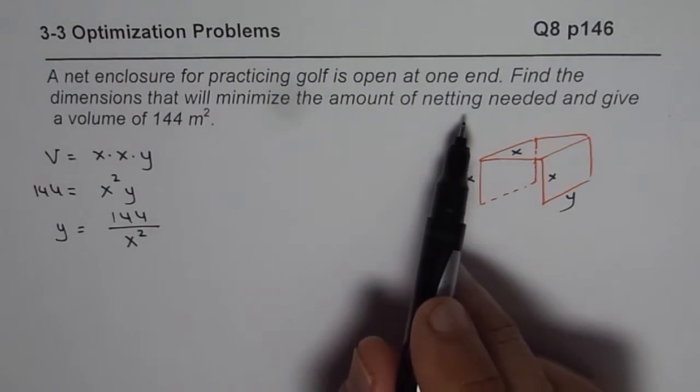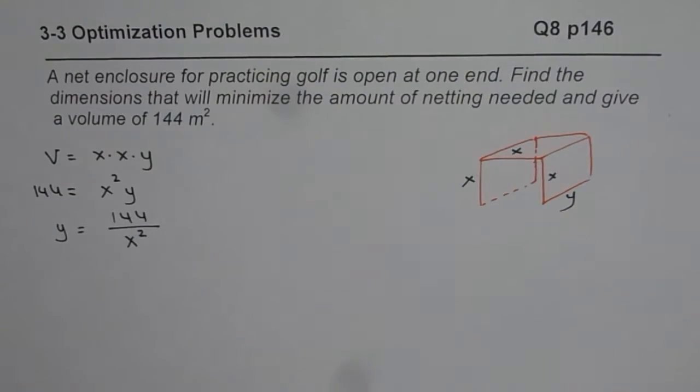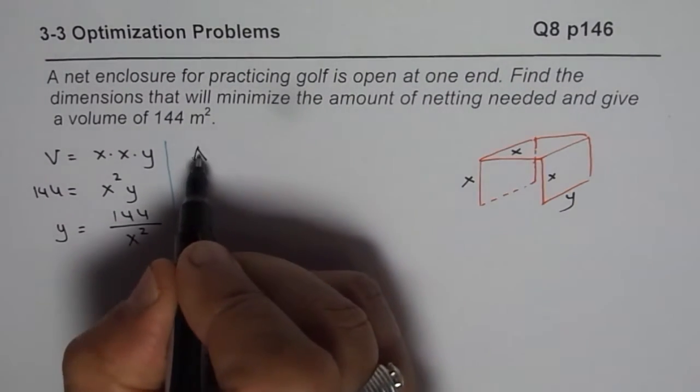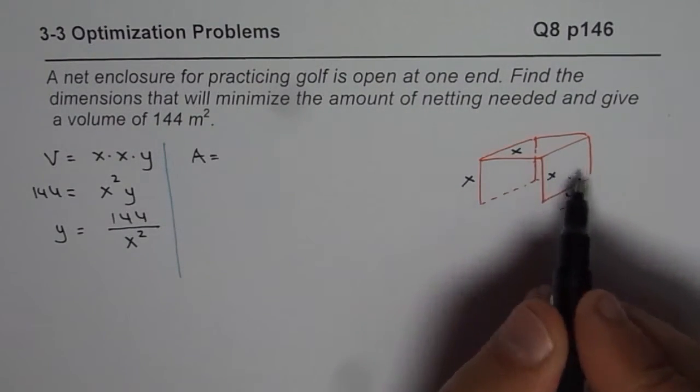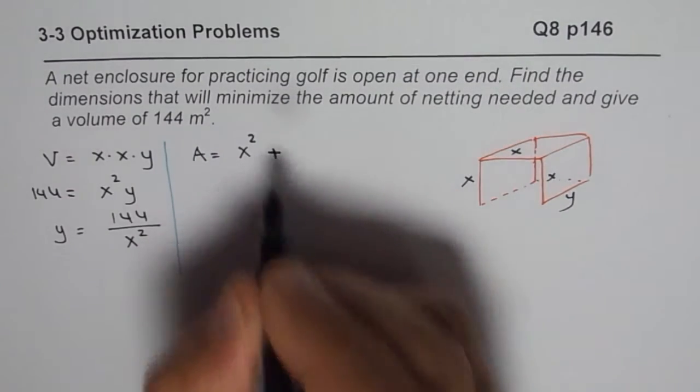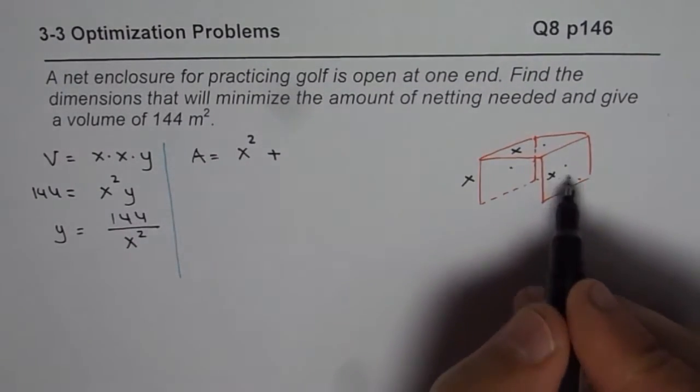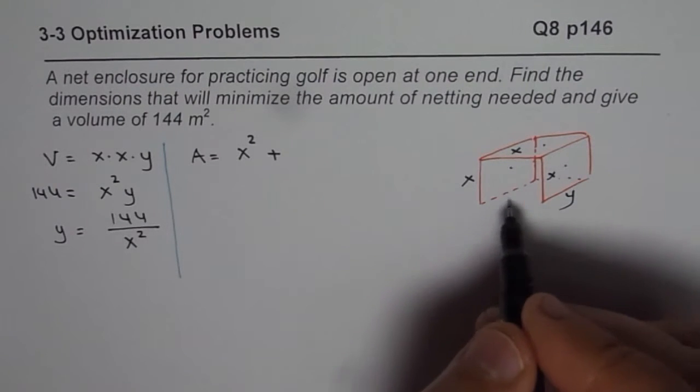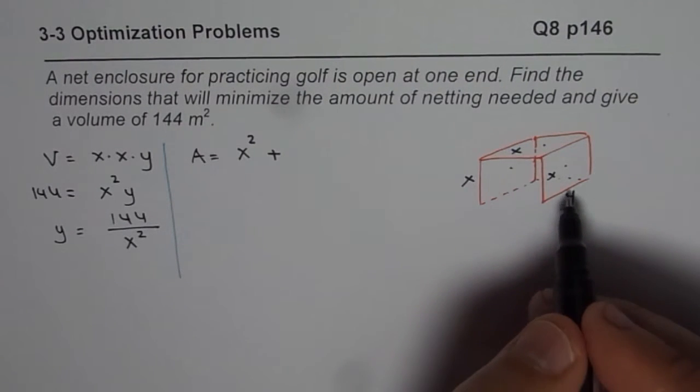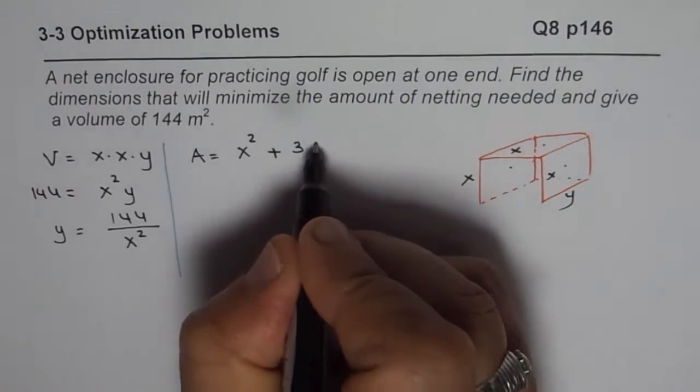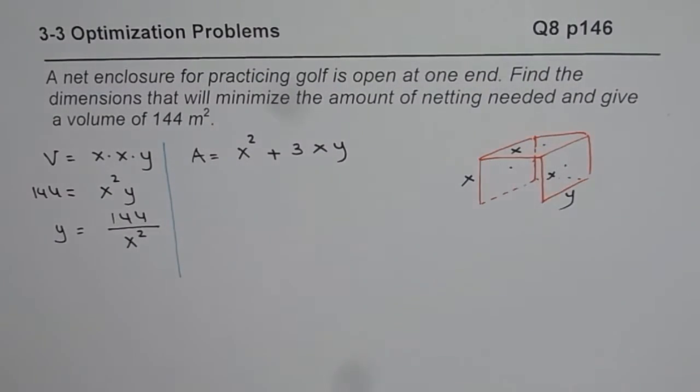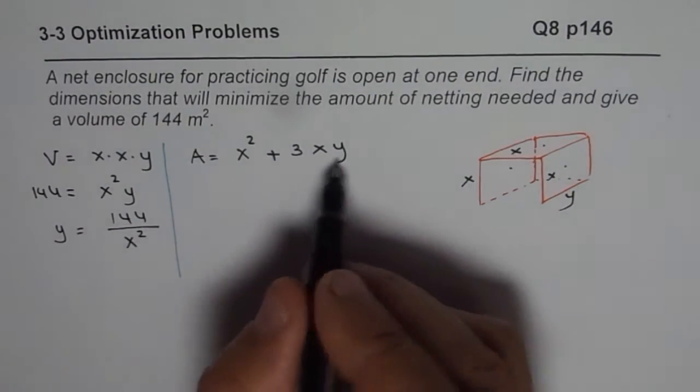Now, since we need to maximize the netting, we will find what the surface area is. So let me develop an equation for surface area. So let us say surface area A will be equals to the back side of the net, for example, will be x square, so we'll have x square. Plus we have got these three sides - we do not need any net in the ground. So we'll take these three sides, each side area is x times y. So 3 times xy is the area of the net.